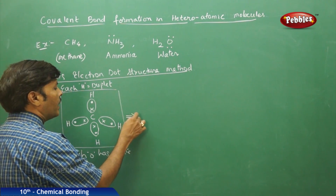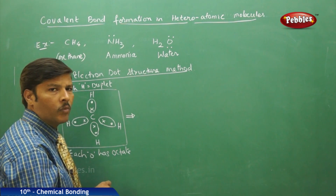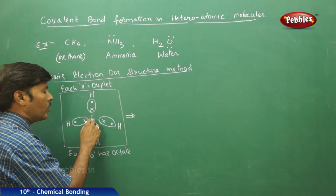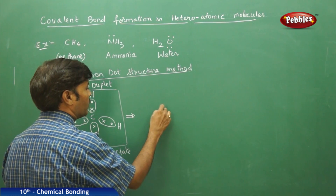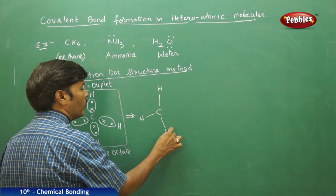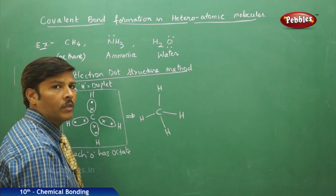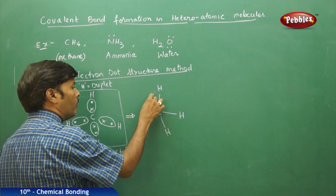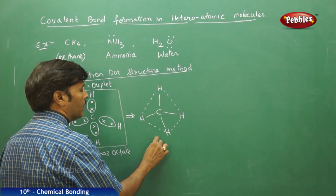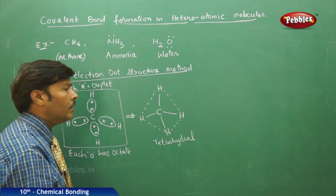If you carefully analyze the structure of the methane molecule, each bond pair results in the formation of one covalent bond. There are four hydrogens aligned at the four corners of a tetrahedron with respect to carbon as the central atom, giving four bond pairs. Therefore, there are four covalent bonds formed in the methane molecule, and its shape is tetrahedral.